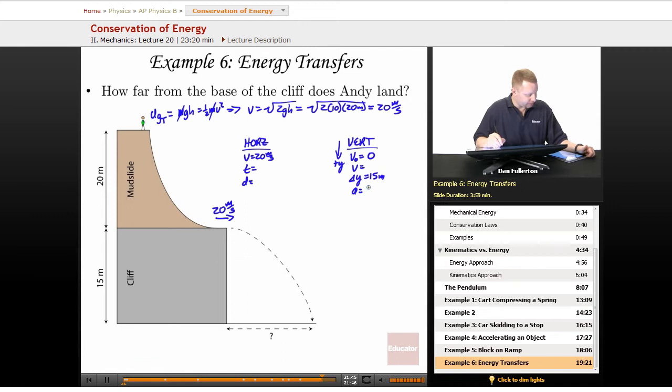A, our acceleration, is going to be 10 meters per second squared, down. And let's see if we can solve for time. The equation I would use to do this is delta y equals v initial times t plus one-half at squared.